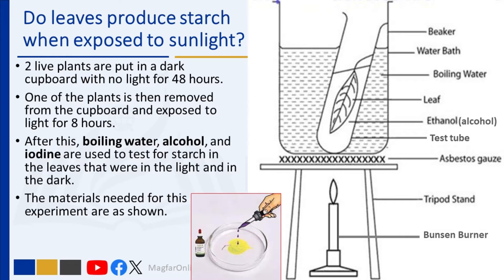In this experiment, two live plants are put in a dark cupboard with no light for 48 hours. During this period the plant is not photosynthesizing — it is not producing any food. This causes the plant to use up any starch reserves that may have been in the leaves. One of the plants is then removed from the cupboard and allowed to sit in the light for eight hours.